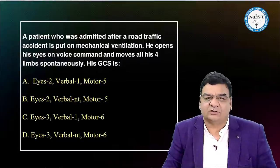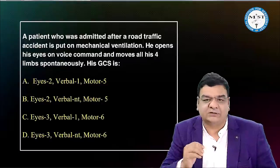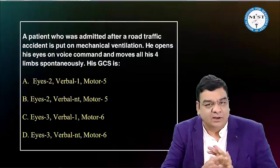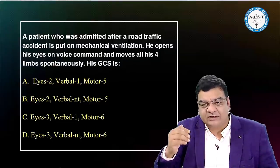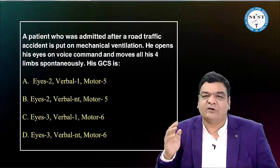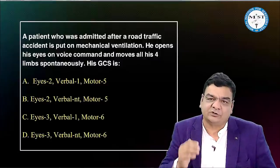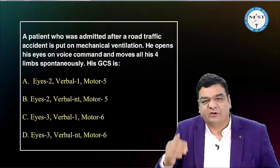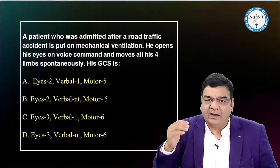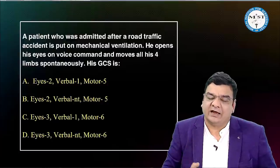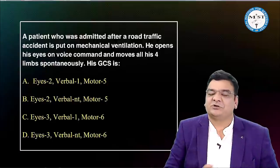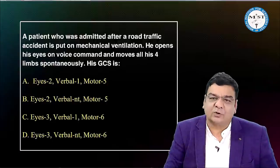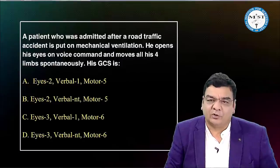Eye: E4 spontaneous, E3 to voice/sound, E2 to pressure/pain, E1 no response. Verbal: V5 oriented, V4 confused, V3 inappropriate words, V2 incomprehensible sounds, V1 no sound. Motor: M6 obeys, M5 localizes, M4 normal flexion/withdraws, M3 abnormal flexion, M2 abnormal extension, M1 no response. Total maximum 15, minimum 3. Mild GCS 13–15, moderate 9–12, severe 8 or less. Comatose patient scores ≤8; dead patient scores 3 — it can never be 0. Motor score is most valuable for prognosis.